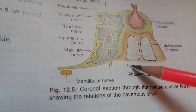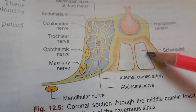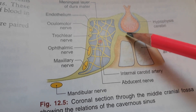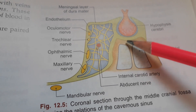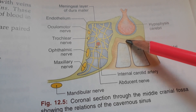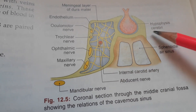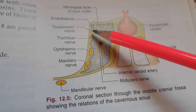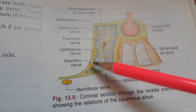Inferiorly, it is related to the hypophyseal fossa, sphenoid sinuses, and two layers of the dura mater. Irregular venous channels also lie below the pituitary gland. On each side it is related to the cavernous sinus with its contents.